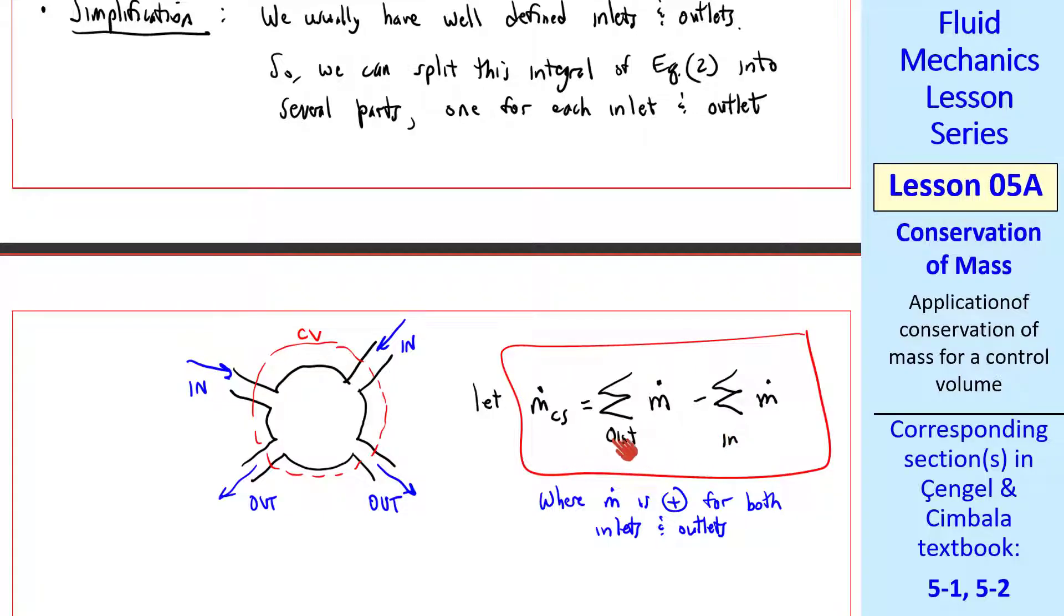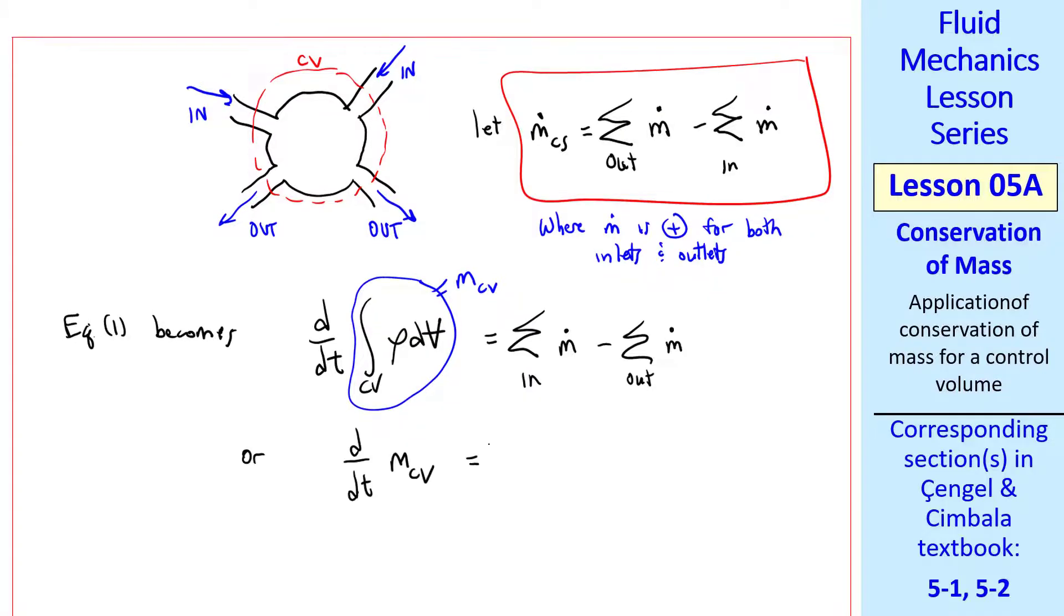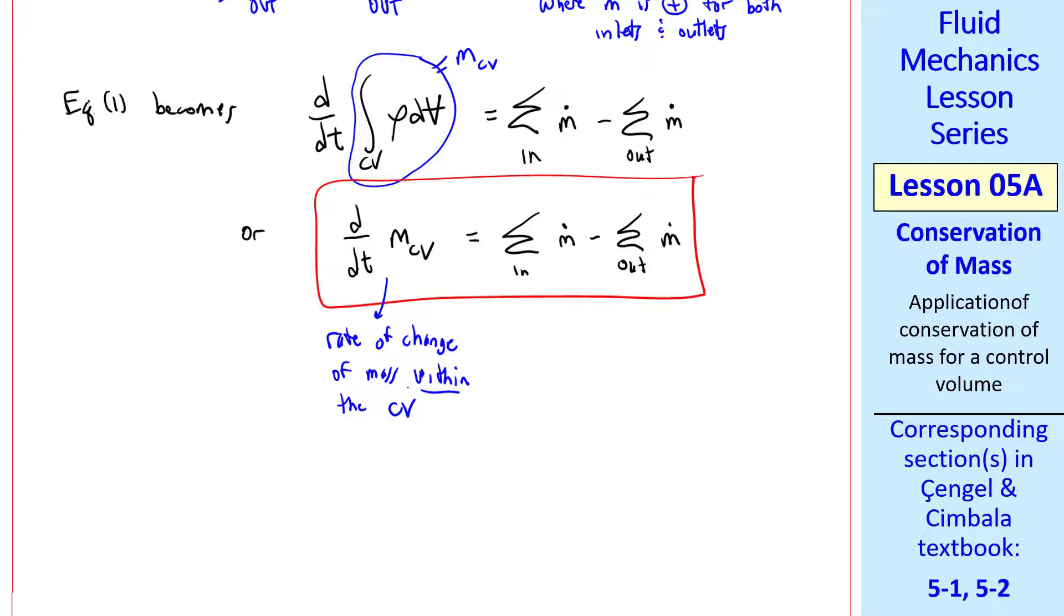This is the net mass flow rate out of the control surface. Then our equation 1 simplifies to d dt of the volume integral equals sigma m dot in minus sigma m dot out, where we have put this control surface term over to the right side of the equation. Since this volume integral is the mass of the control volume, this equation simplifies to d dt of the mass of the control volume equal the sum of m dot in minus out. This form is the easiest one to understand. The term on the left is the rate of change of mass within the control volume, and the terms on the right represent the net rate of mass flow into the control volume. Be careful with the signs, since we put our control surface integral on the right.